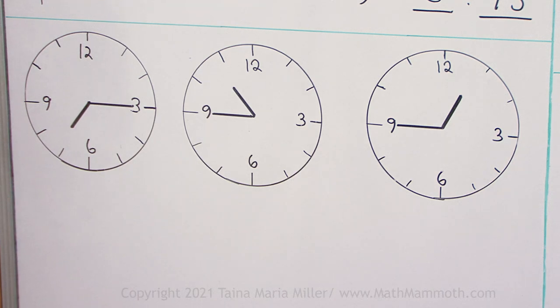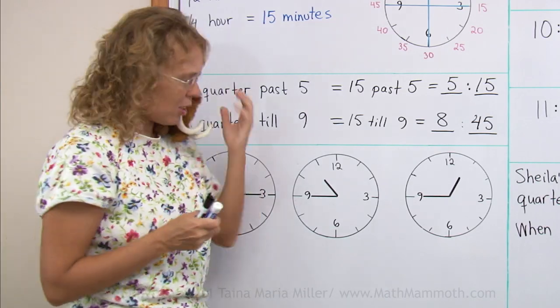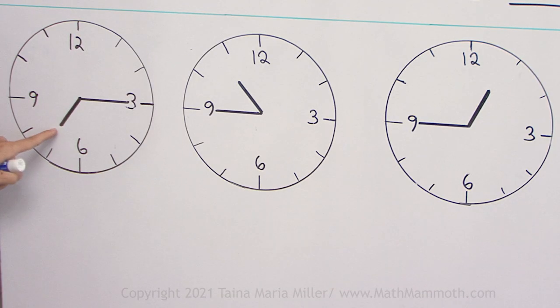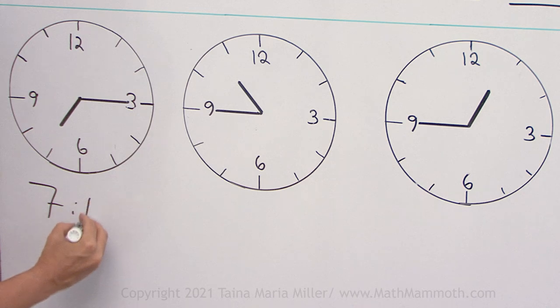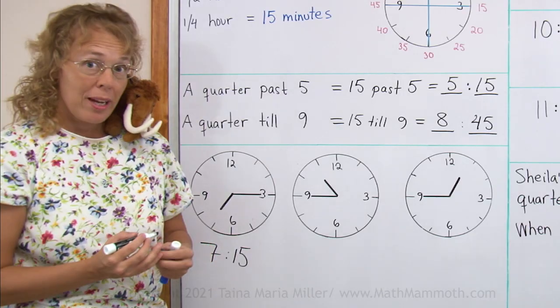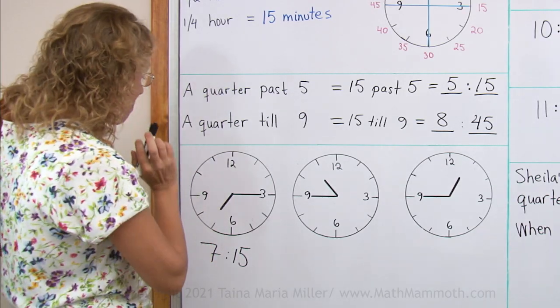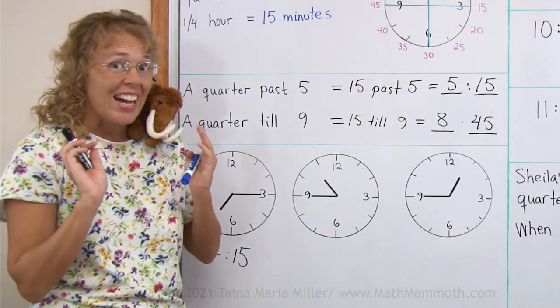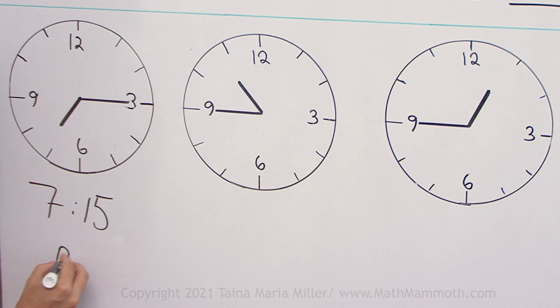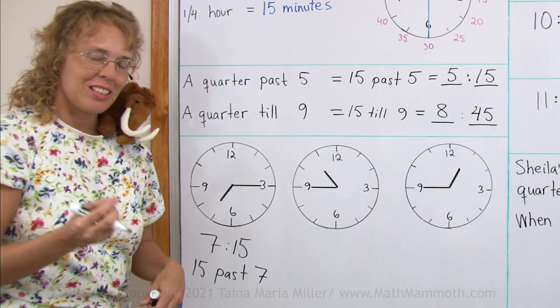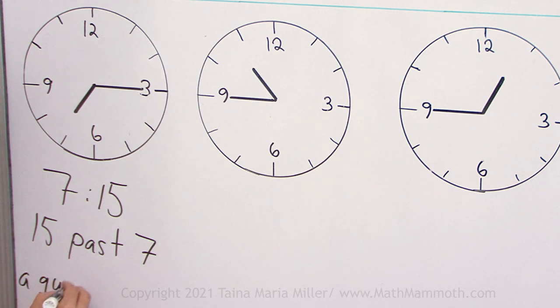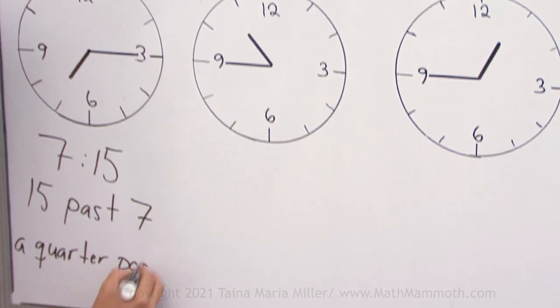What time is it? Oh, Matthew knows. This is the hour hand. It is 7. 7 hours 15 minutes. Another way to say it, use the past, something past something, 15 minutes past 7. And then using the word quarter, a quarter past 7.